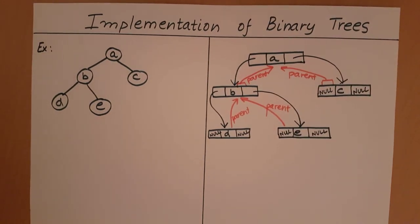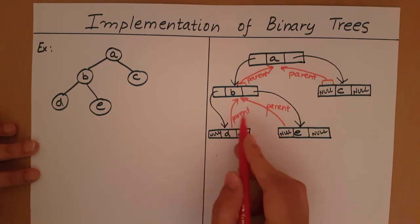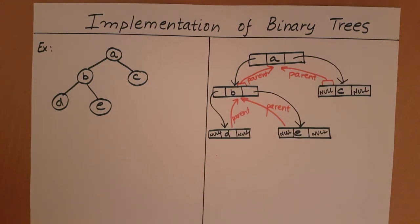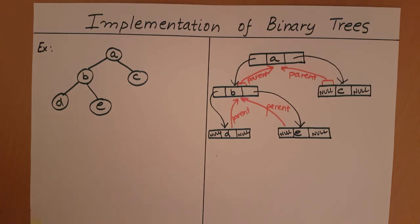The parent pointer is definitely optional — it does not stop being a tree if nodes do not keep track of the parent — but it is a recommended practice because it will make your programs and functions easier to write. So this is how you implement a binary tree using a linked list: each node has the data element, keeps track of the left child with the left pointer, the right child with the right pointer, and optionally the parent using a parent pointer.